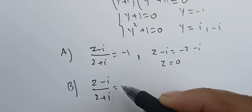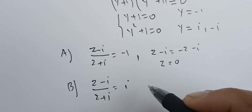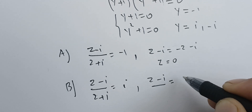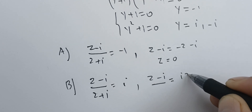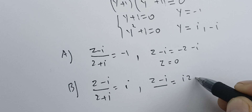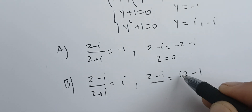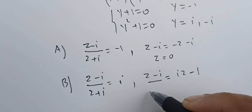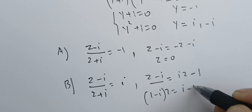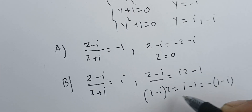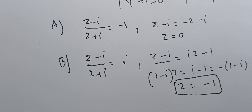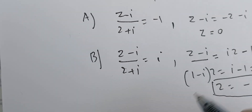Case two: (z minus i) over (z plus i) equals i. Multiplying gives z minus i equals i times (z plus i), which is iz plus i squared, which is iz minus one. Rearranging gives (1 minus i)z equals i minus one, which is minus(1 plus i) over (1 minus i), giving z equals minus one.